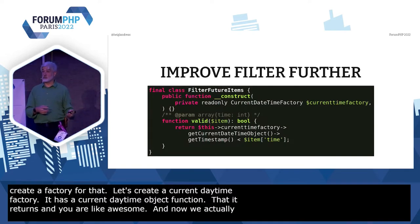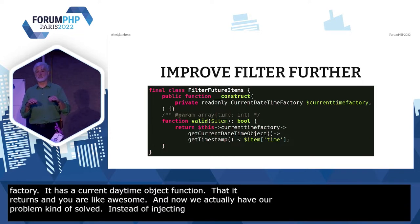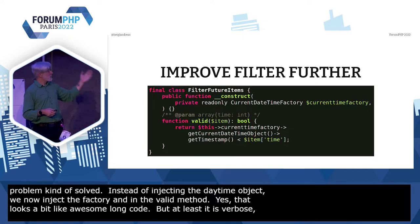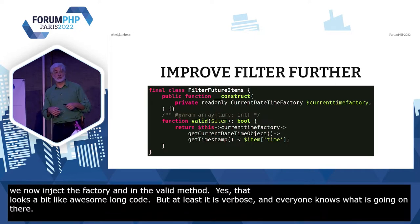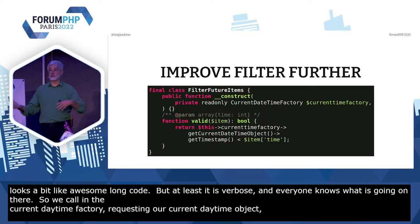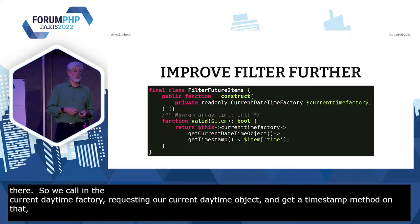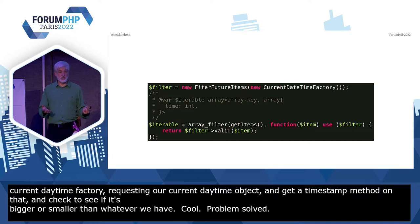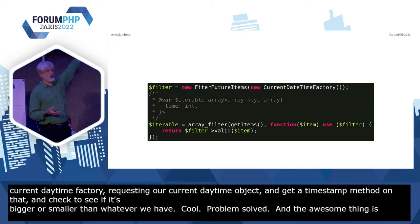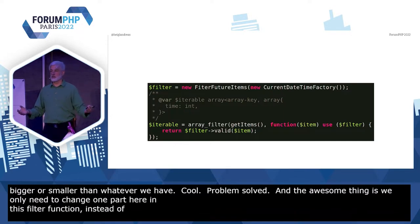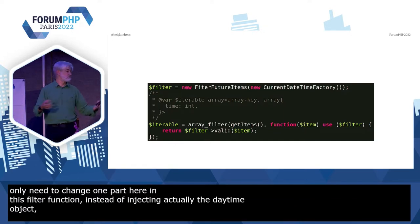And now we actually have our problem kind of solved. Instead of injecting the DateTimeObject, we are now injecting the factory. And in the `validate` method, we are calling the `currentDateTimeFactory` and requesting our `currentDateTimeObject` and calling the `getTimestamp` method on that, and checking whether that is bigger or smaller than whatever we have in our array. We only need to change one part in this filter function: inject the factory instead of the DateTimeObject, and the filter callback stays the same.